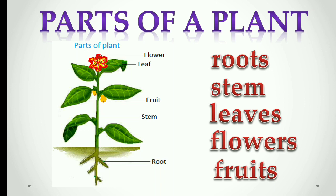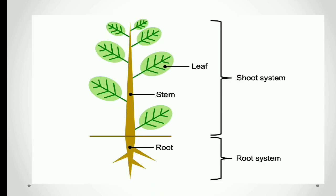The part of the plant above the soil that you can see is called the shoot. And the part of the plant that is below the soil, which you cannot see, is called the root.